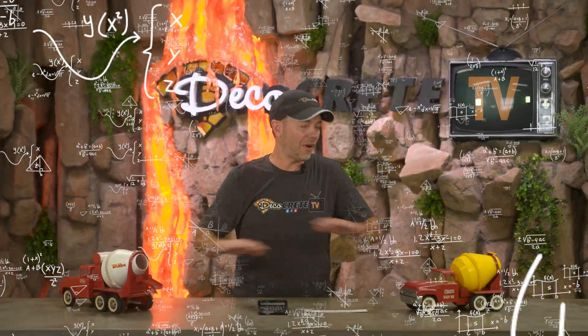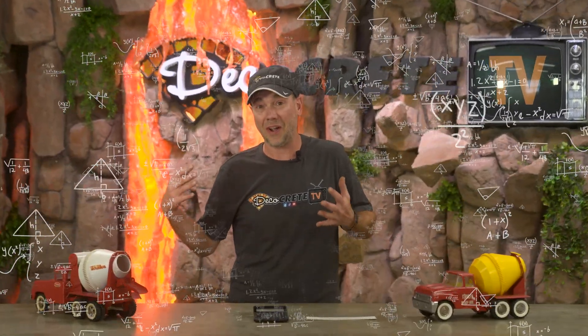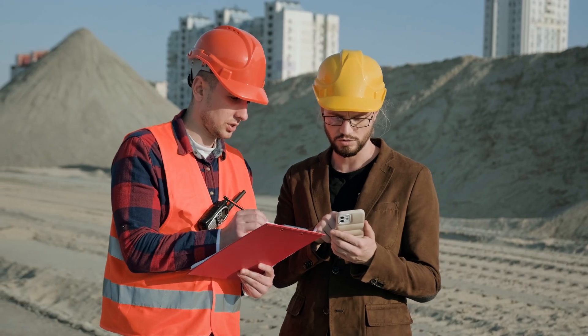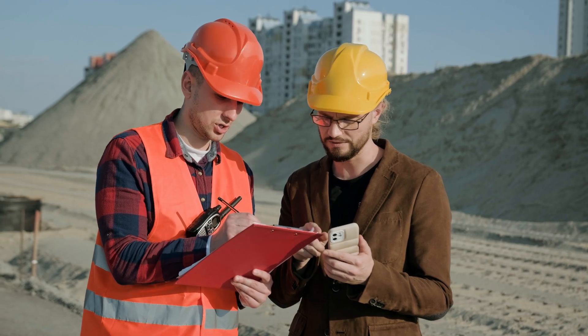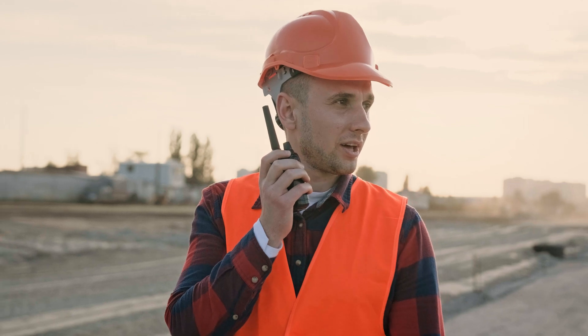I've seen people use all kinds of different formulas for this — some of them really easy, some of them incredibly complicated. When I first started pouring concrete, all the foremen on the crew knew what the divider numbers were. They'd figure the concrete and then drop a quarter into the payphone to call the concrete plant, or radio back to the shop to have them order it.